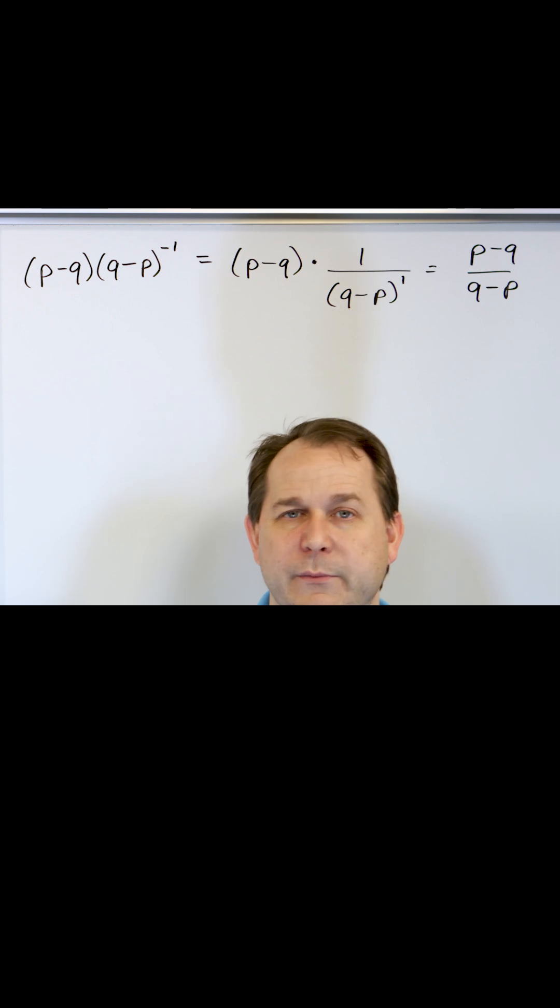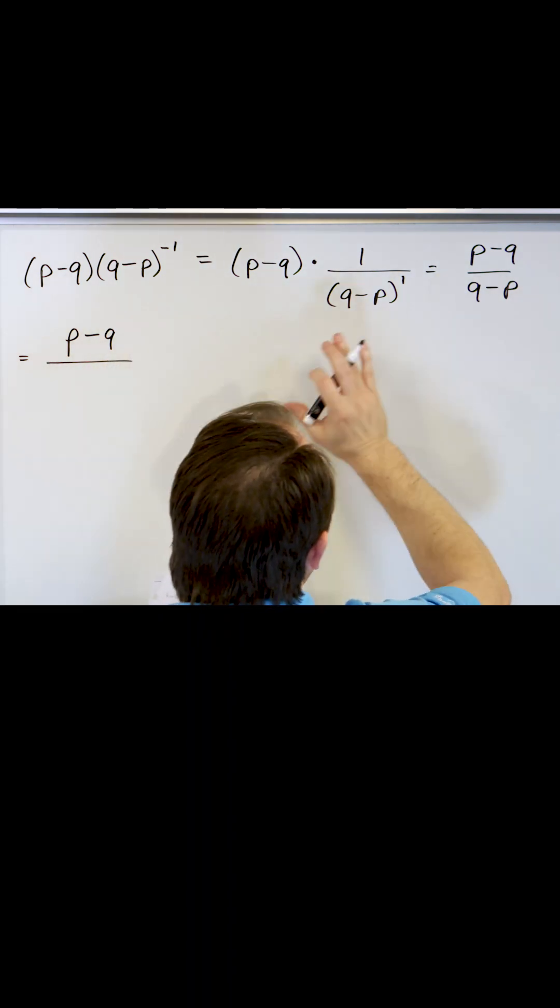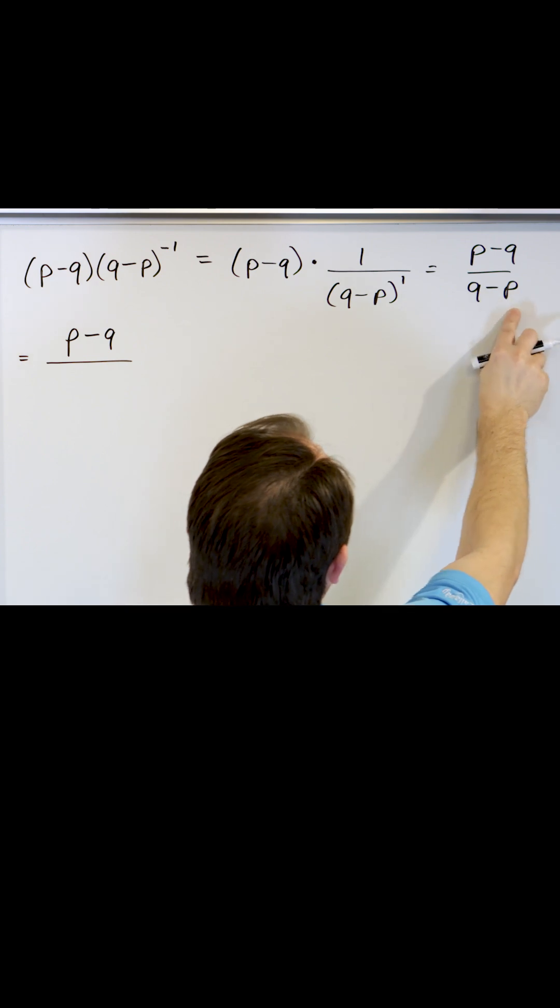So what we can do is play around with this a little more to figure out a way to make it cancel. On the top, let's leave P minus Q intact. On the bottom, I'm going to get through it and then we'll talk about it. I want to factor something out of this.